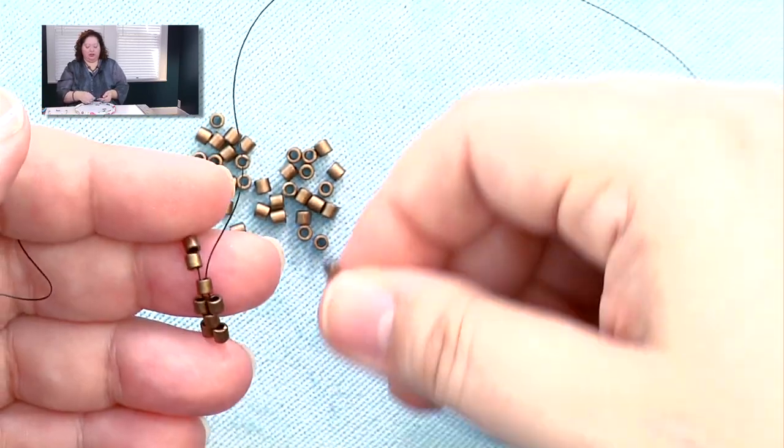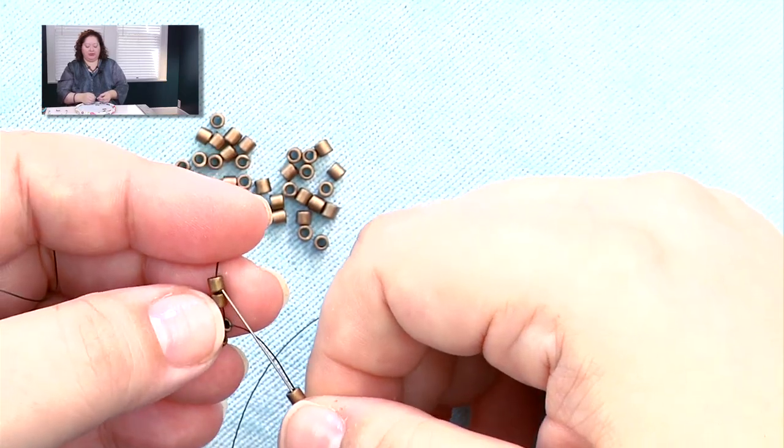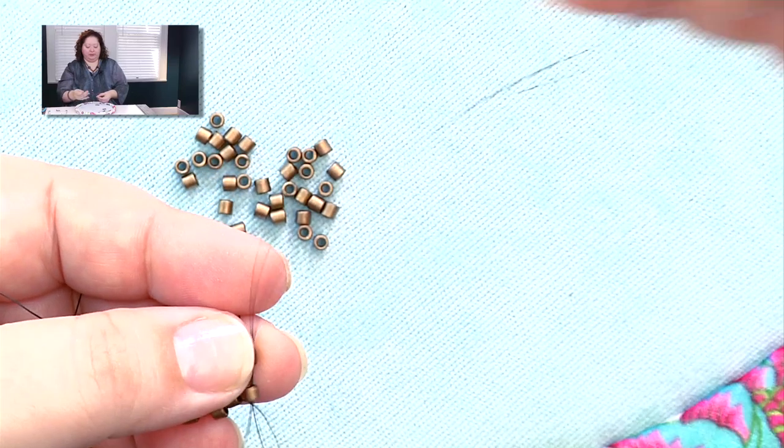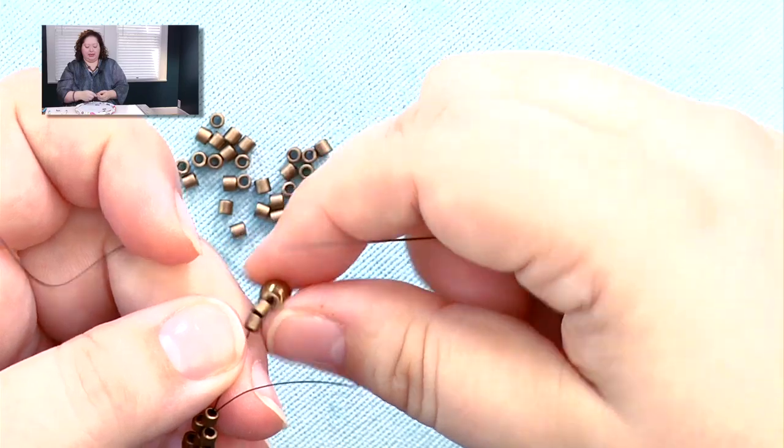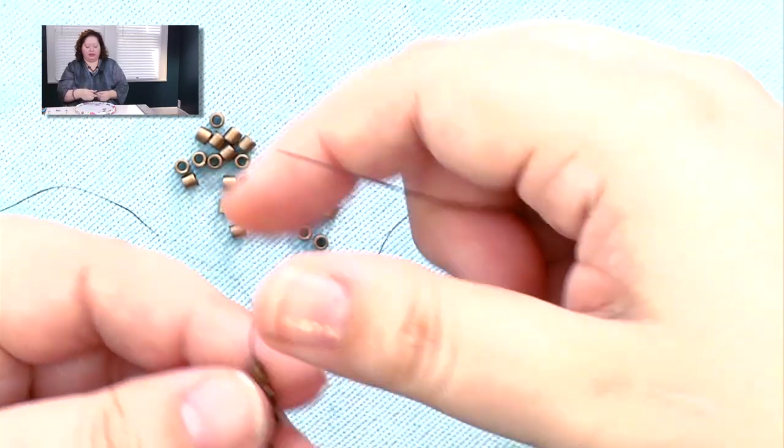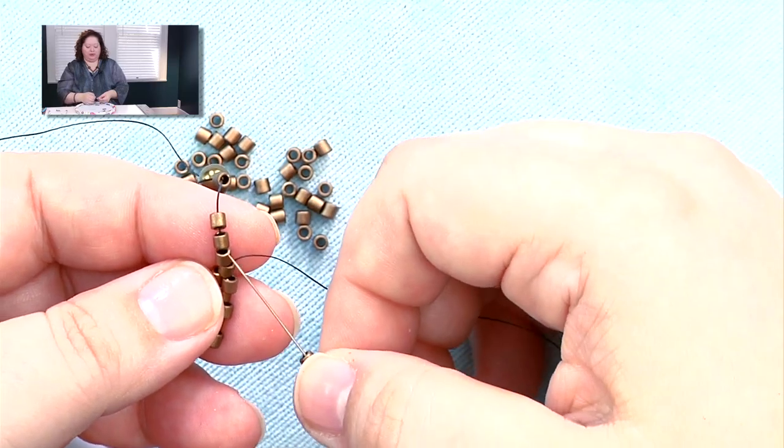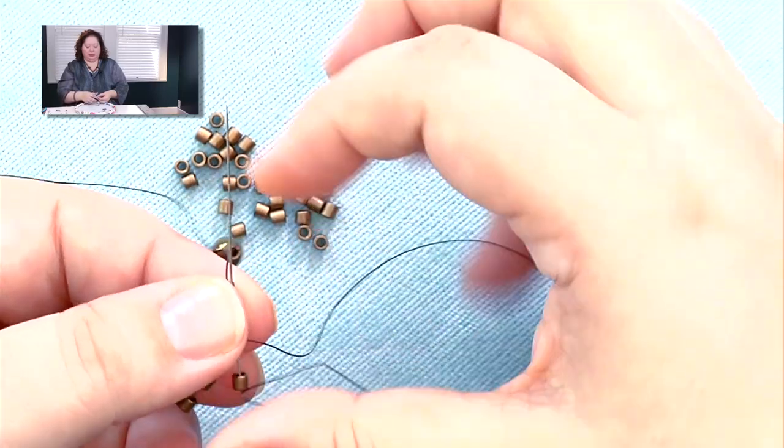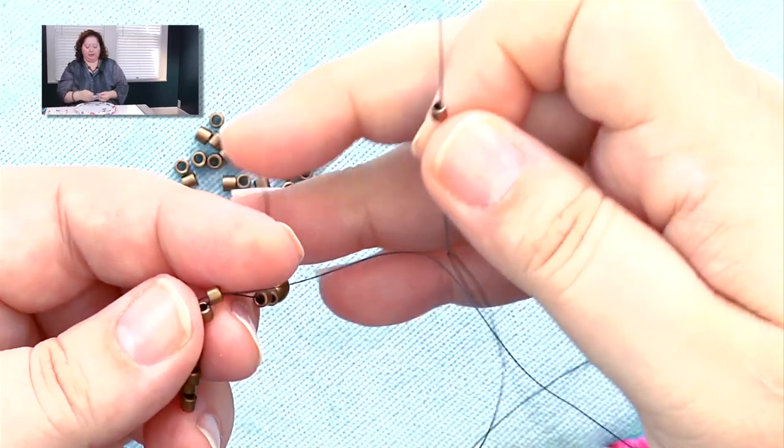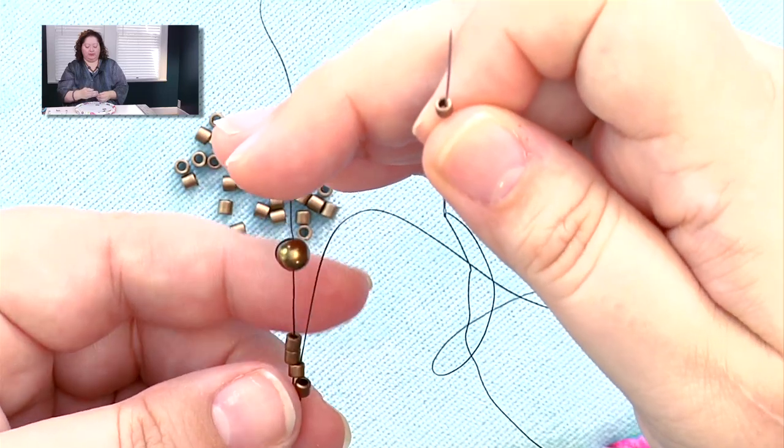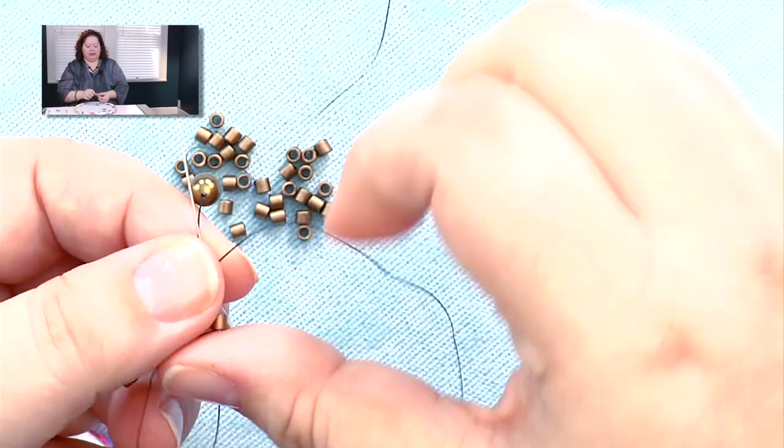You'll keep doing this all the way until the end of your beads, so you pick up a bead, skip one for it to sit next to, and then pass through the next bead, and then, got two more to add on this row. Pick up a bead, skip one for it to sit next to, pass through the next one, and then last bead. Pick up a bead, skip one, pass through the last bead.